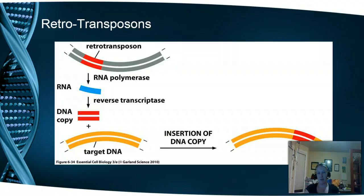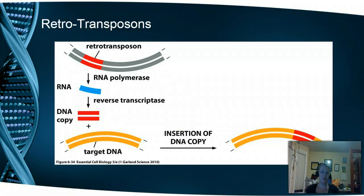Retrotransposons form an RNA sequence off of the retrotransposon sequence within the DNA. This then uses an enzyme called reverse transcriptase to read that RNA and create a DNA copy that's inserted into the target DNA. An RNA polymerase present in the host makes this new DNA, though sometimes they come with their own information to create this and sometimes they rely on the cell's mechanisms. The retrotransposon uses an RNA intermediate to jump into the other DNA.